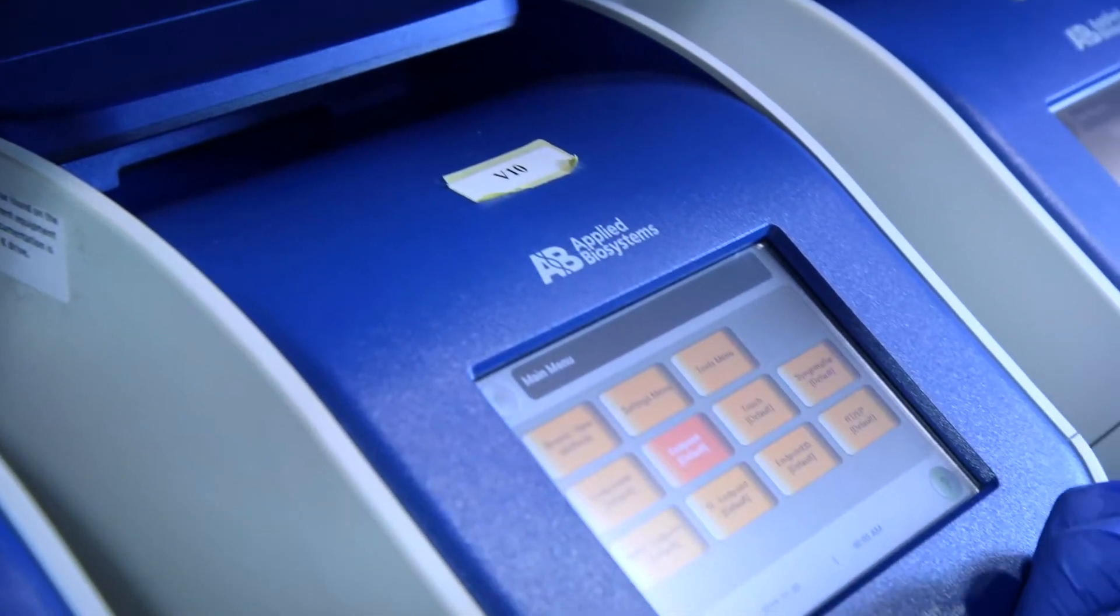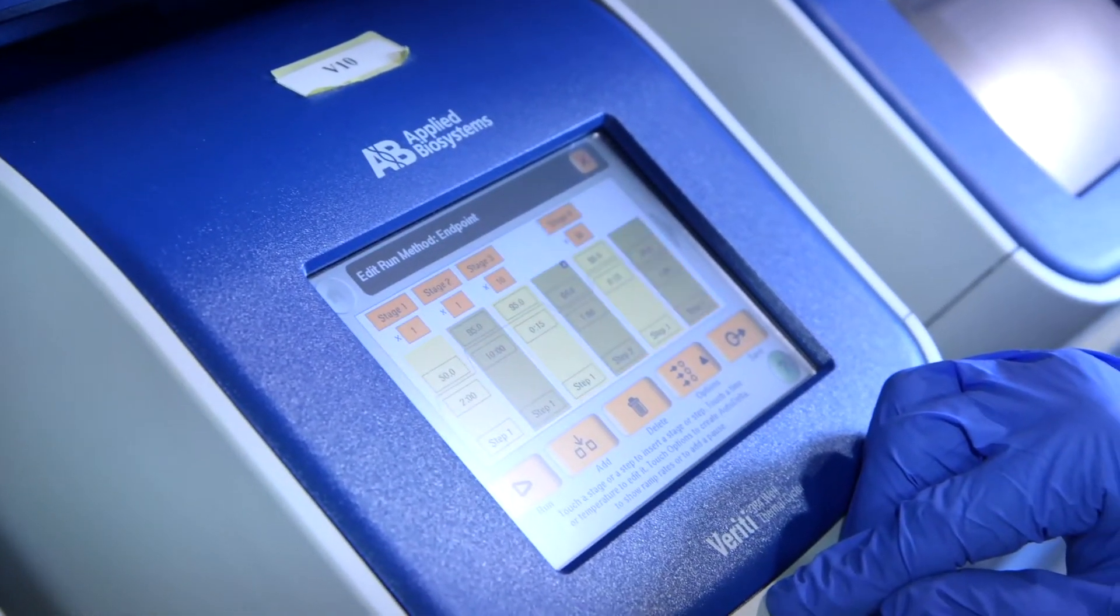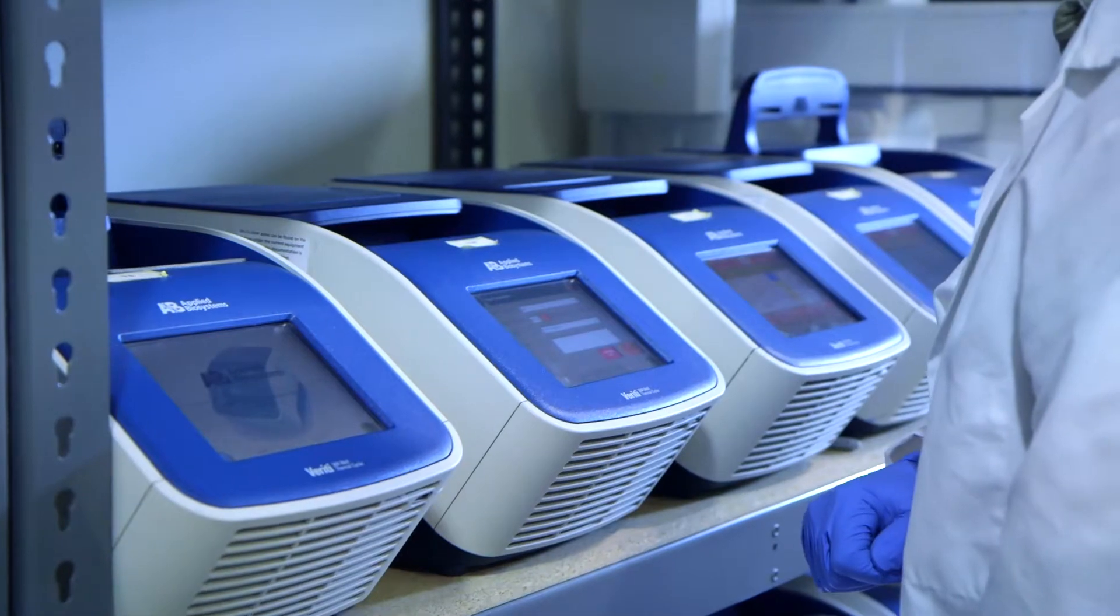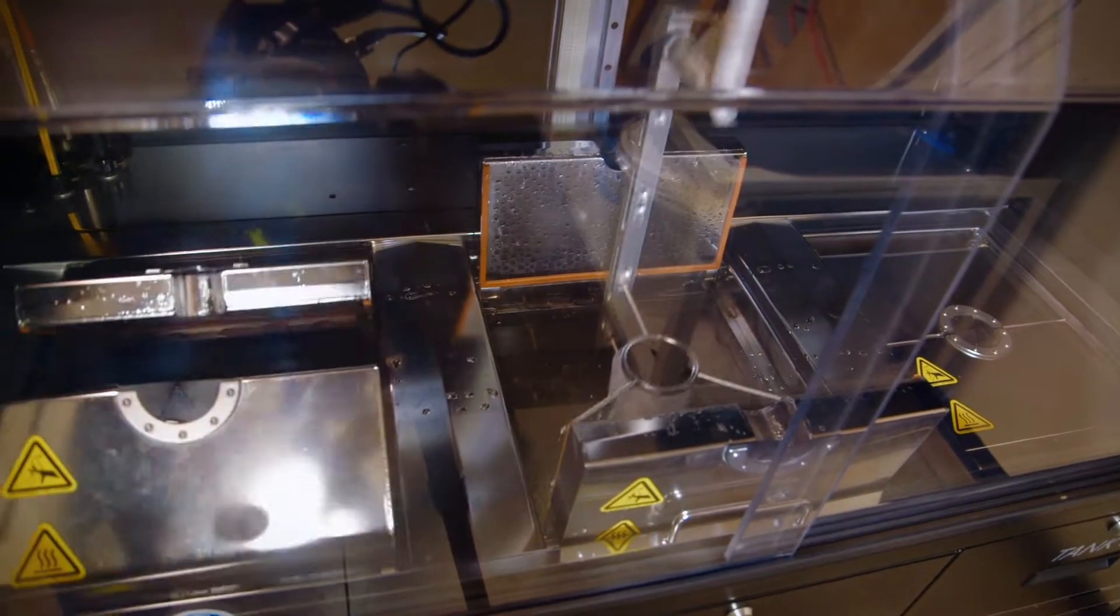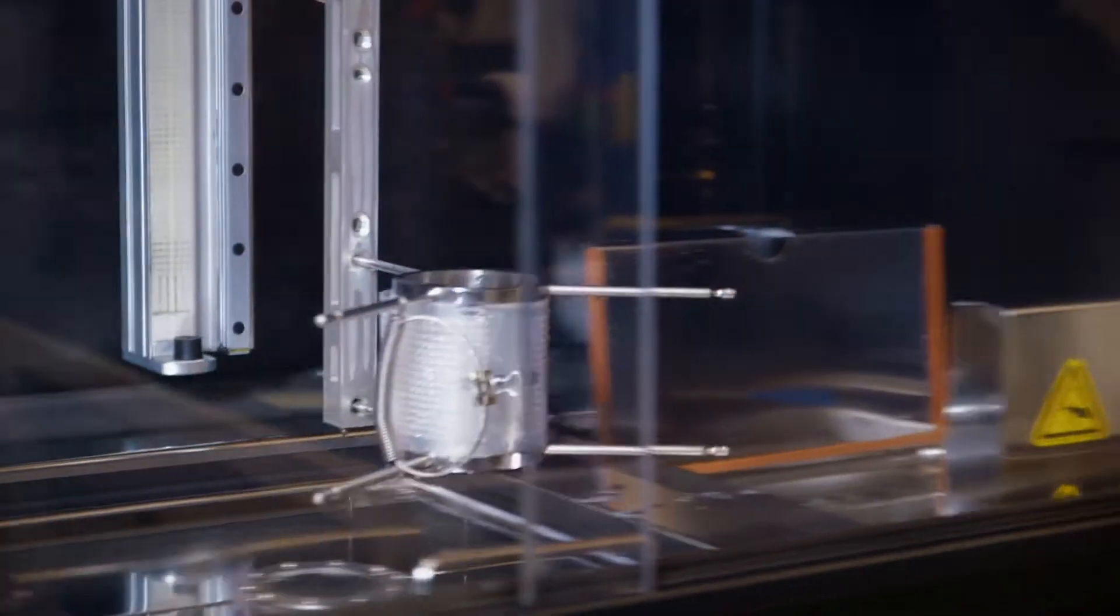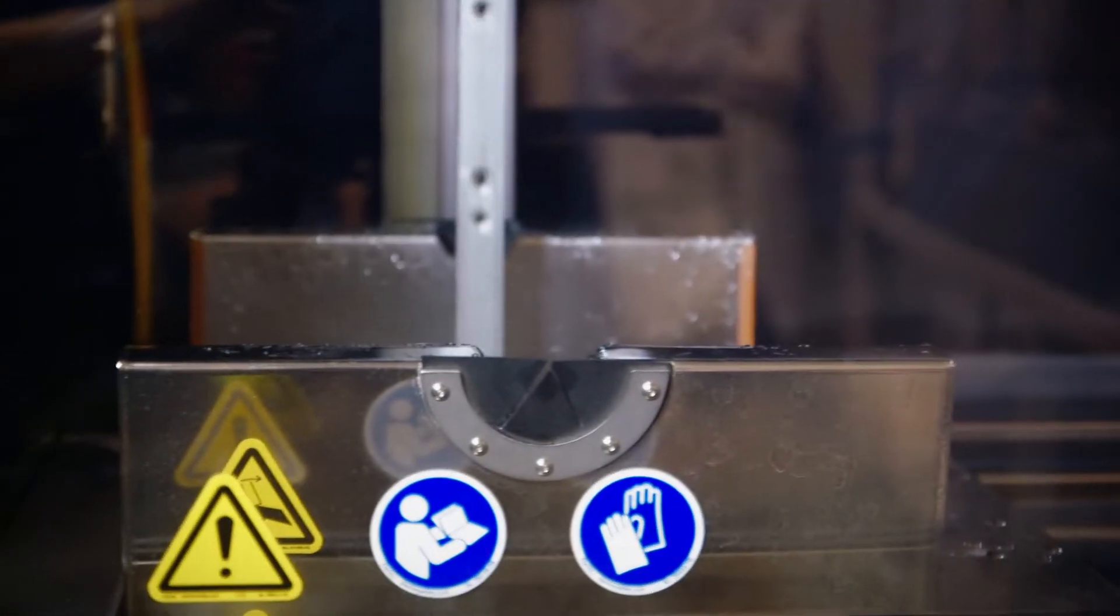The selection of markers will be based on the pattern of linkage equilibrium and information of population structure specific to each breeding program. We convert the markers from chip to tape and run them on our high sample throughput platform. This reduces the cost and time of genotyping without losing accuracy.